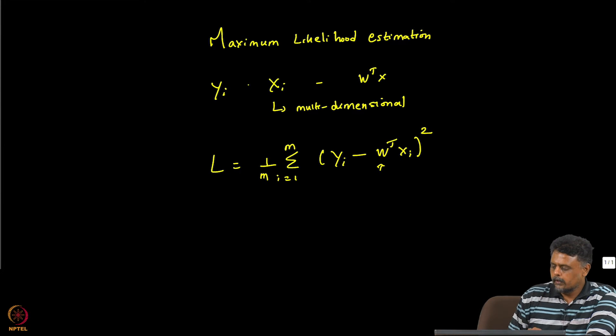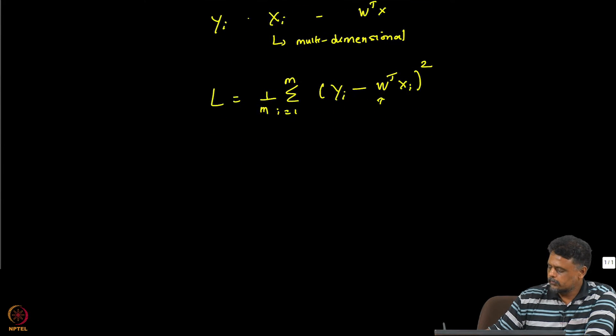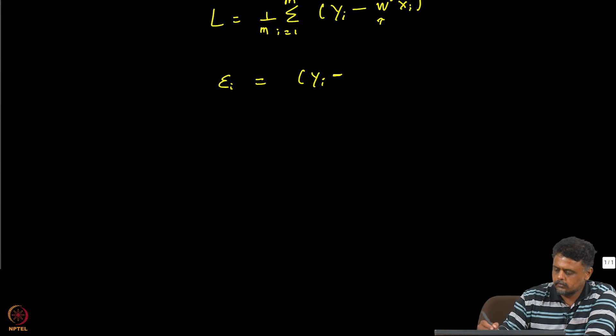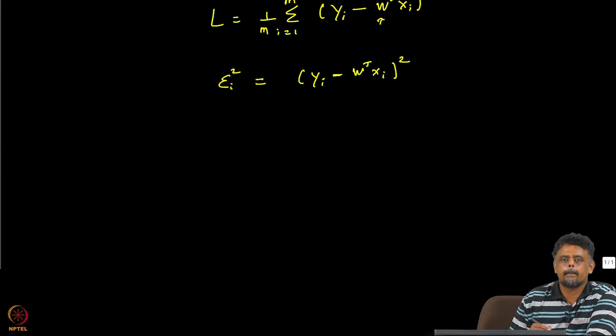So we will consider individual errors. For instance we will define this variable epsilon i as yi minus W transpose xi squared. That is the error.